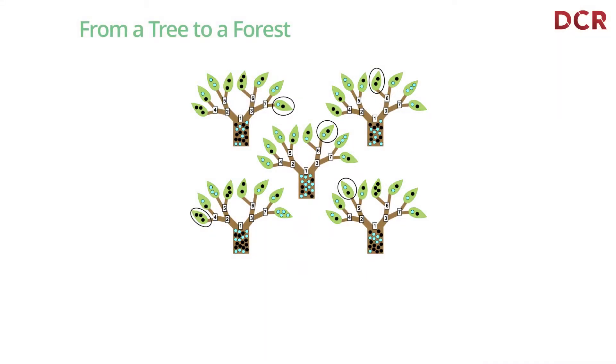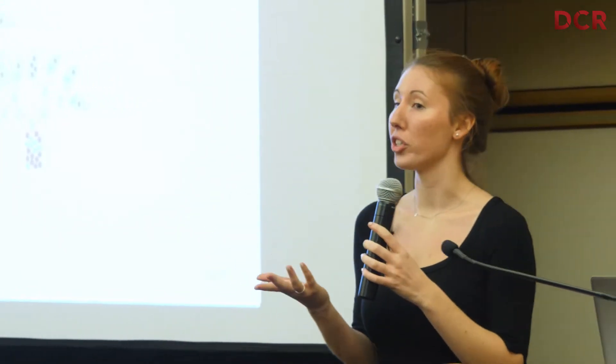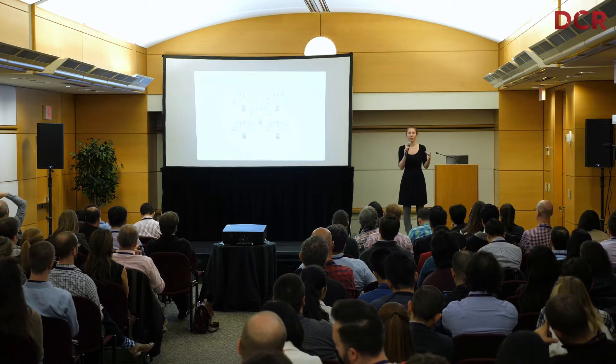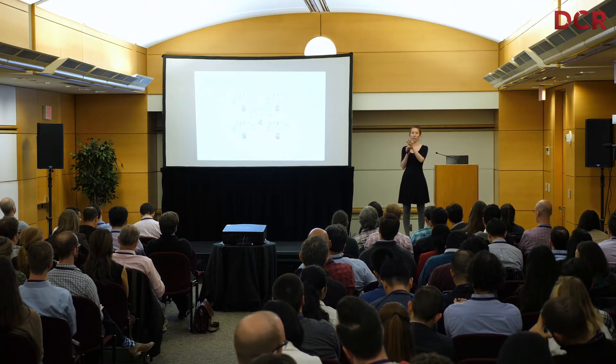Each tree has its own bootstrap sample, so each observation might appear in multiple trees but not all of them. At each split, different features are available. So observation A might be labeled one class in one tree and another class in a different tree. To combine all those labels across multiple trees, we take a majority vote — each tree labels each observation, and the final label is the majority vote across all trees.